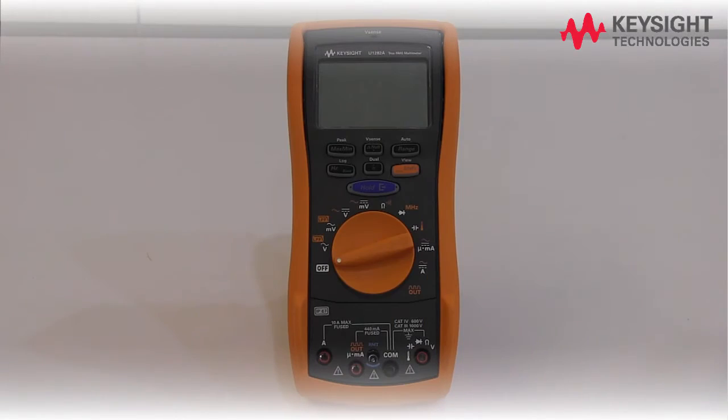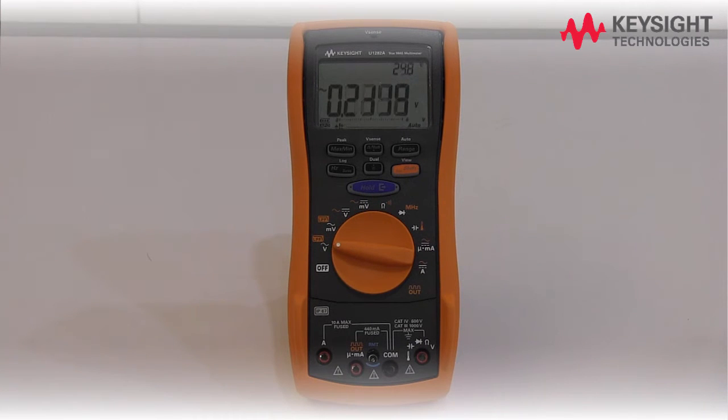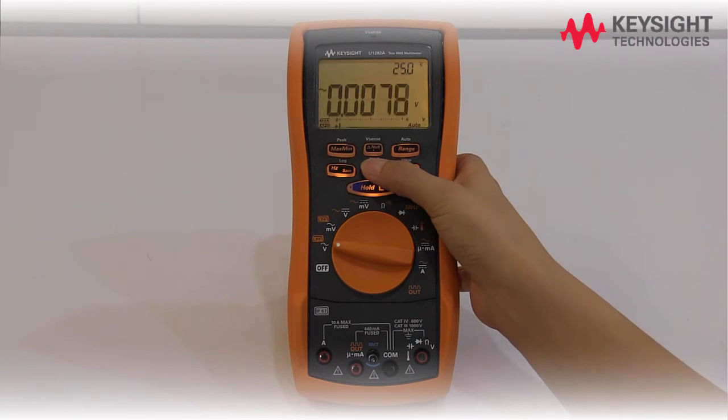To power on the multimeter, turn the rotary switch from OFF to any other position. For optimum viewing experience under low light conditions, press the backlight key.